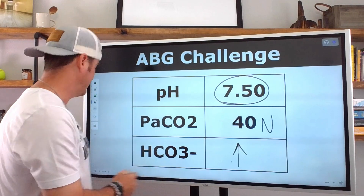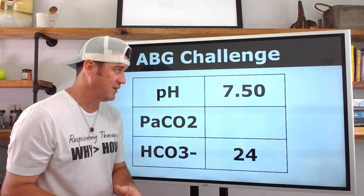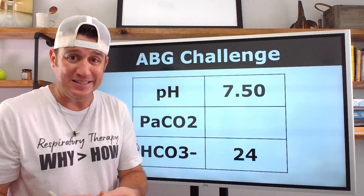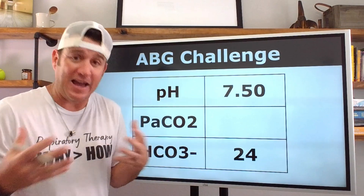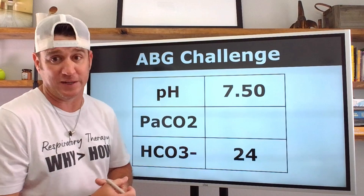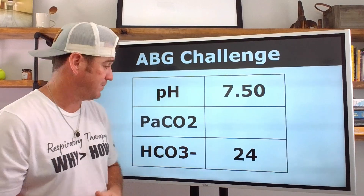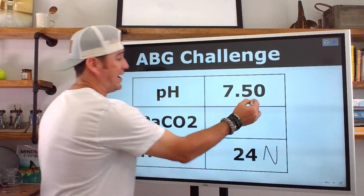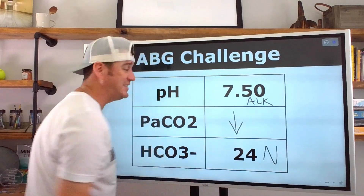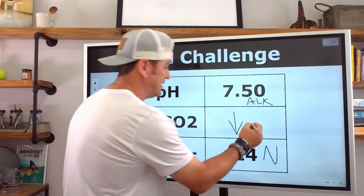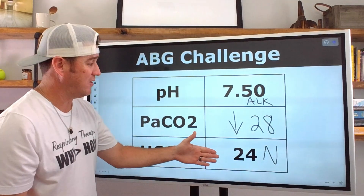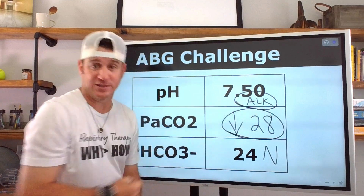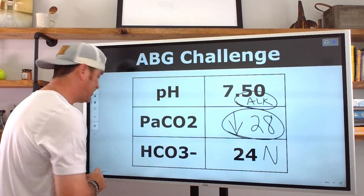One more simple one: pH 7.50. We're alkalotic, so the interpretation will end in alkalosis. Just knowing the pH is 7.50 tells us that. Now we see a normal bicarb — so we're alkalotic because our CO2 is decreased, maybe around 28. So: pH 7.50, CO2 28, bicarb 24 — this is an uncompensated respiratory alkalosis.